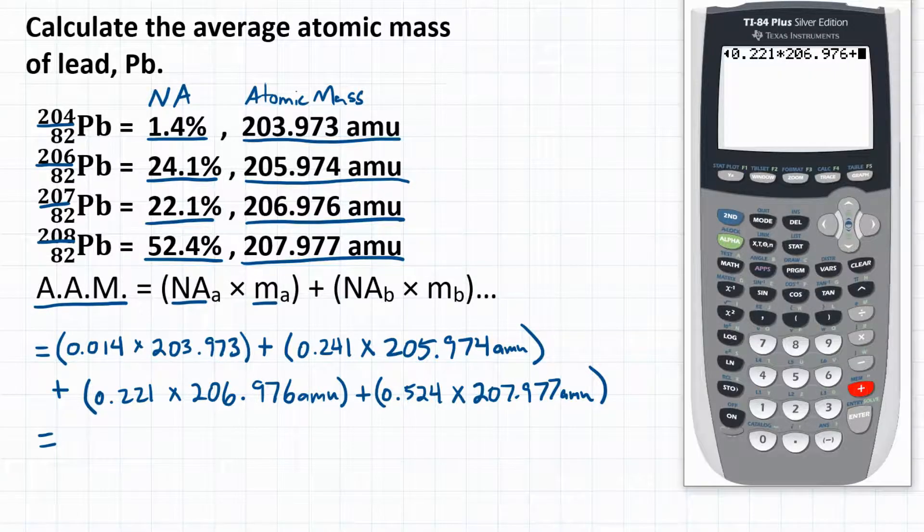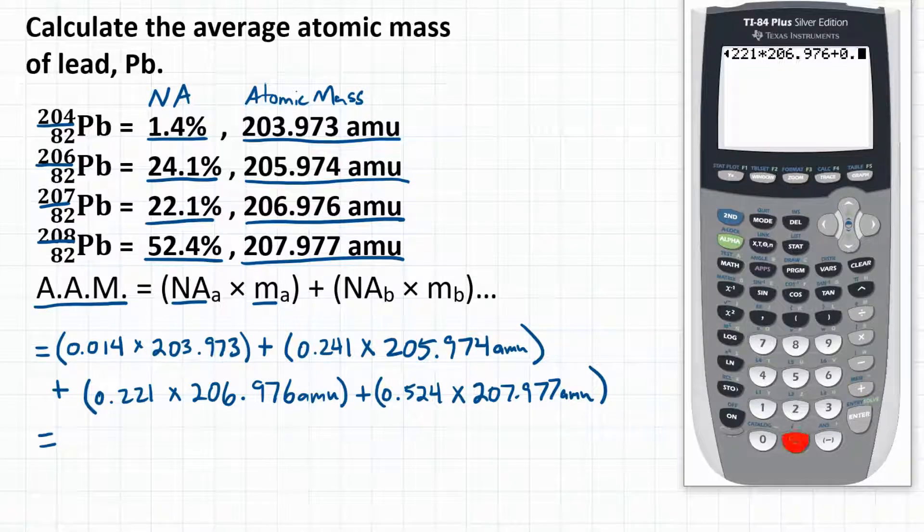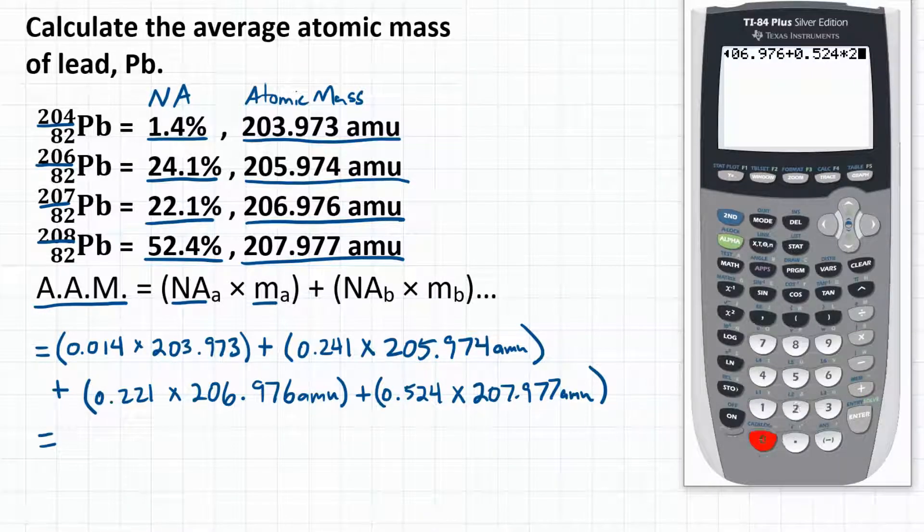the last isotope, we're going to add 0.524 times 207.977. All right, if we did that correctly, our calculator gives us 207.217.